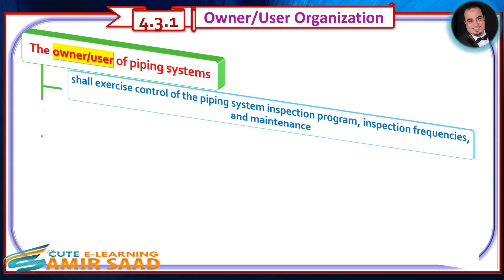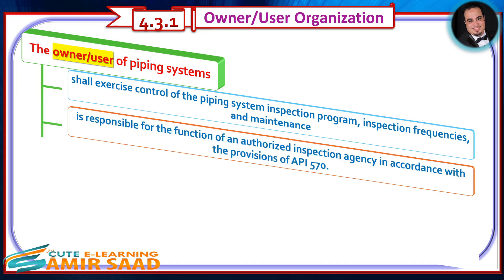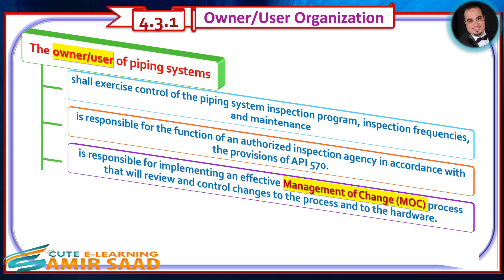The owner-user of piping systems shall exercise control of the piping system inspection program, inspection frequencies, and maintenance. The owner-user is responsible for the function of an authorized inspection agency in accordance with the provisions of API 570, and is responsible for implementing an effective management of change (MOC) process that will review and control changes to the process and to the hardware.